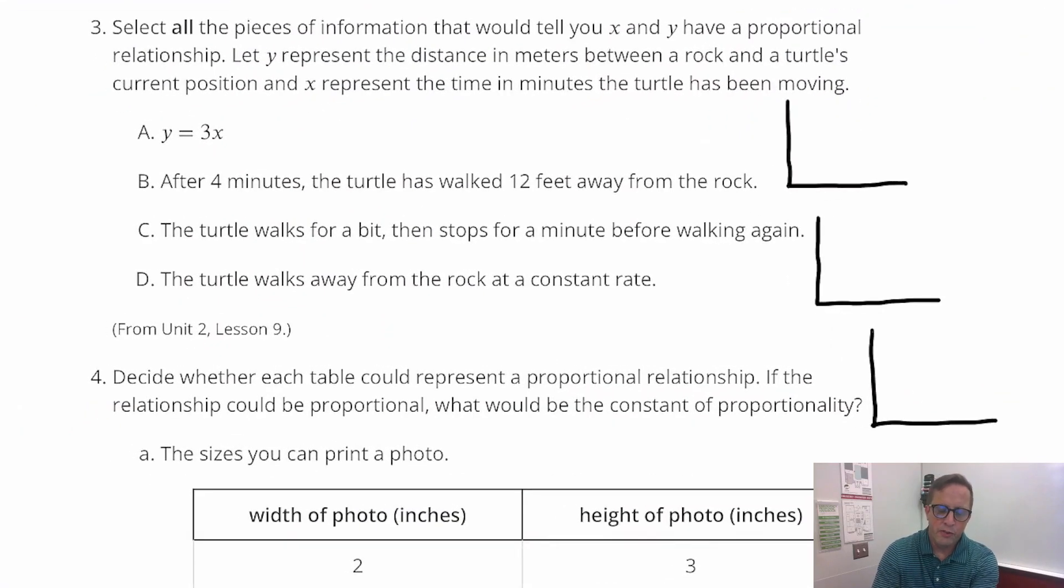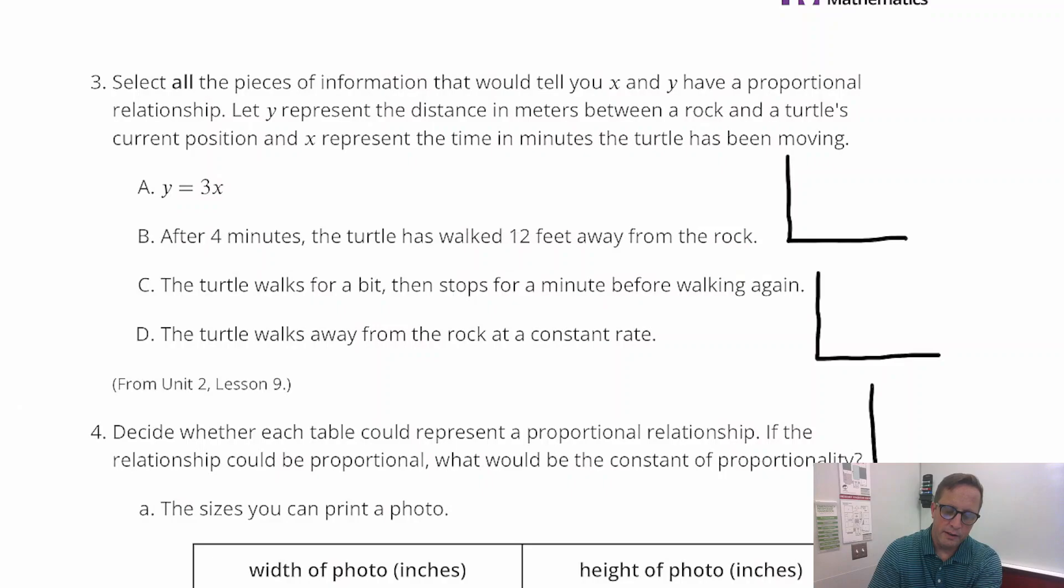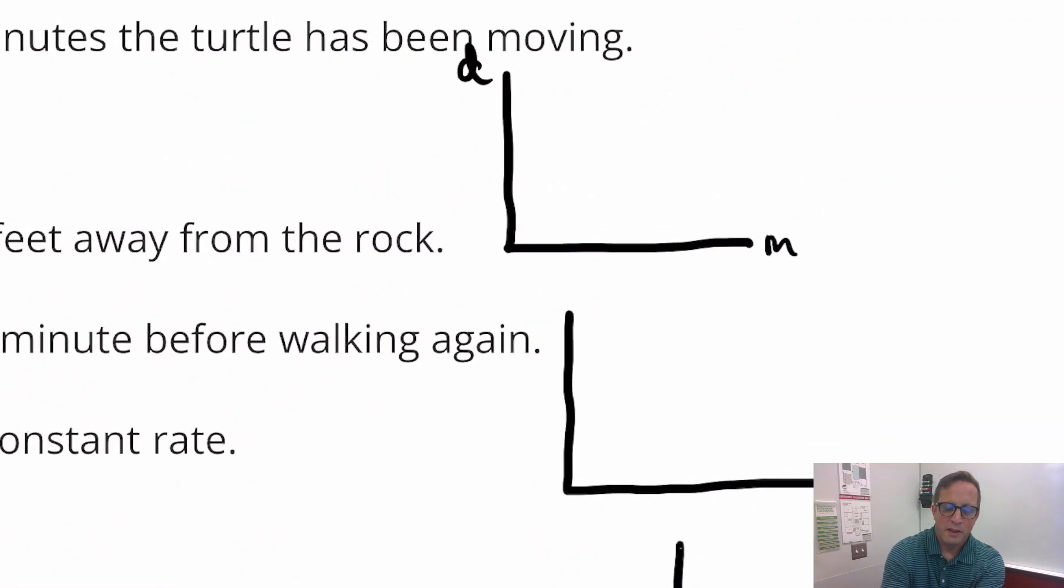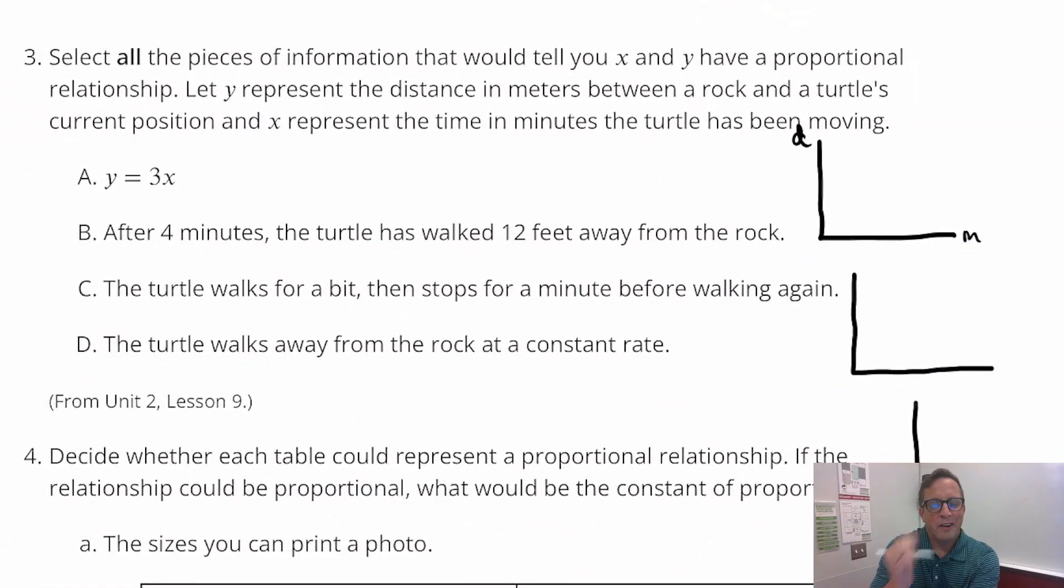Number three, select all pieces of information that would tell you X and Y have a proportional relationship. Let Y represent the distance in meters between a rock and a turtle's current position, and X represent the time in minutes the turtle has been moving. It's a lot to read right there, I know. Sometimes read these problems again, try to underline the important information if these sometimes get confusing. But Y represents distance in meters and X represents minutes. That's basically like your X and your Y right there. And typically on most graphs, anything time-related is always going to be your X-axis.